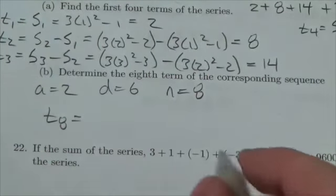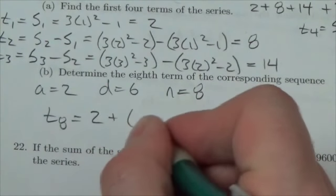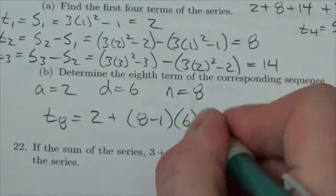So all we've got to do is plug this in to the formula here. So first term is 2. N is 8, so that's 8 minus 1. Okay, so that's 7. And then our D value is 6.